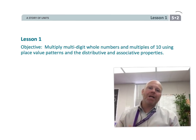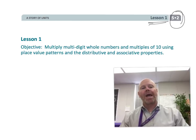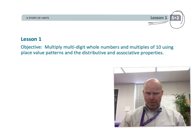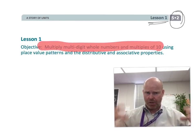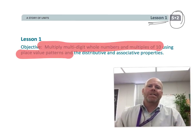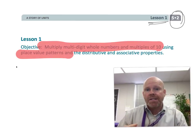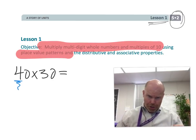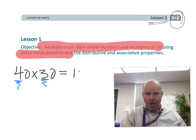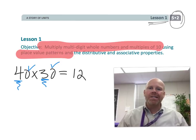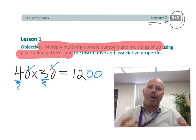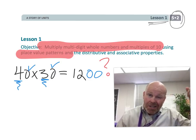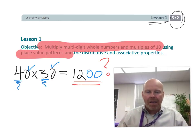This is fifth grade module 2 lesson 1. In this lesson, students are going to be learning how to multiply multi-digit whole numbers and multiples of 10 using place value patterns. This means — for example, 40 times 30 — the classic trick teachers would teach is: take the 4, take the 3, multiply to get 12, stick on the two zeros, and that's your answer. The point of this lesson is to explain the mathematical underpinnings of why that makes sense, so that math is more than just a trick to memorize but has meaning to it.